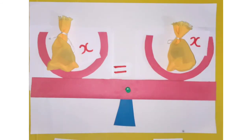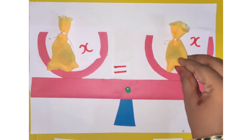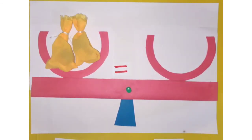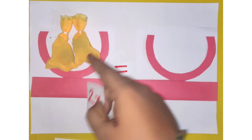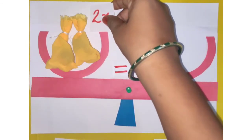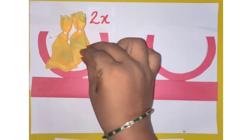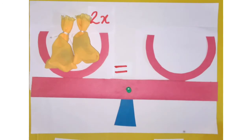If we put both bags together, we get 2x — x plus x equals 2x. Similarly, if we have three bags it will become 3x, if four then 4x, and so on. The bag represents the unknown quantity, that is x. Since we have two bags, it will be 2x.